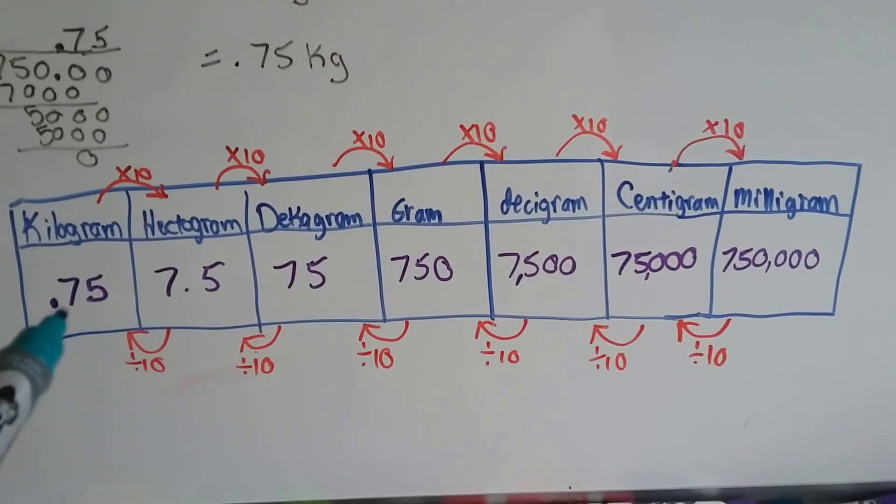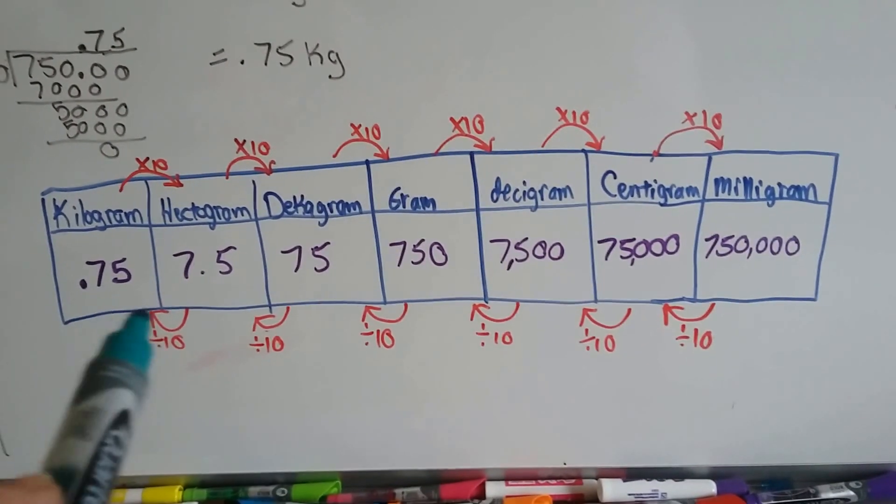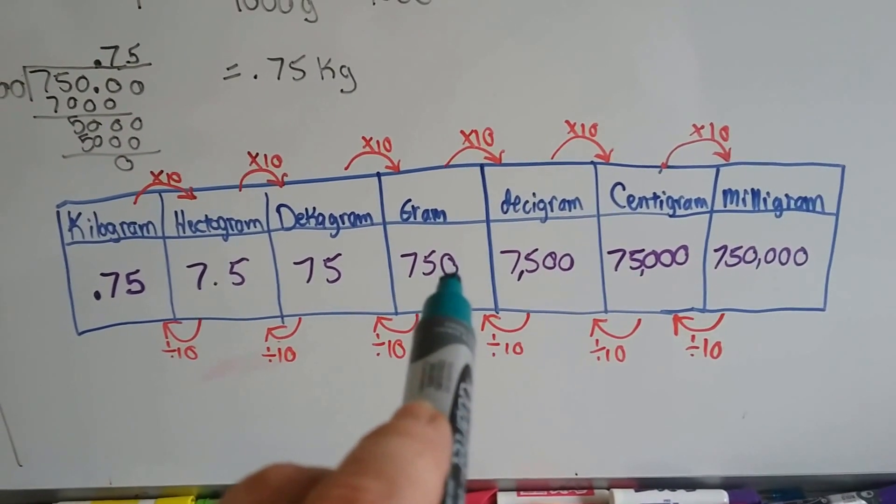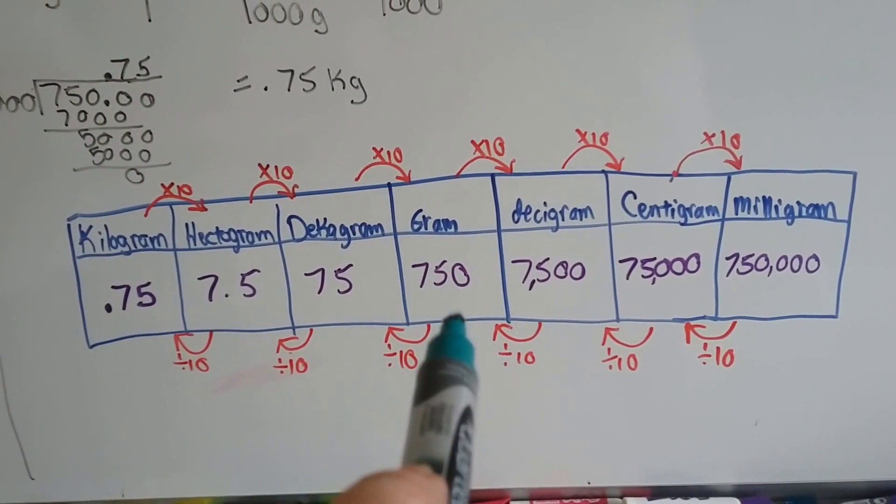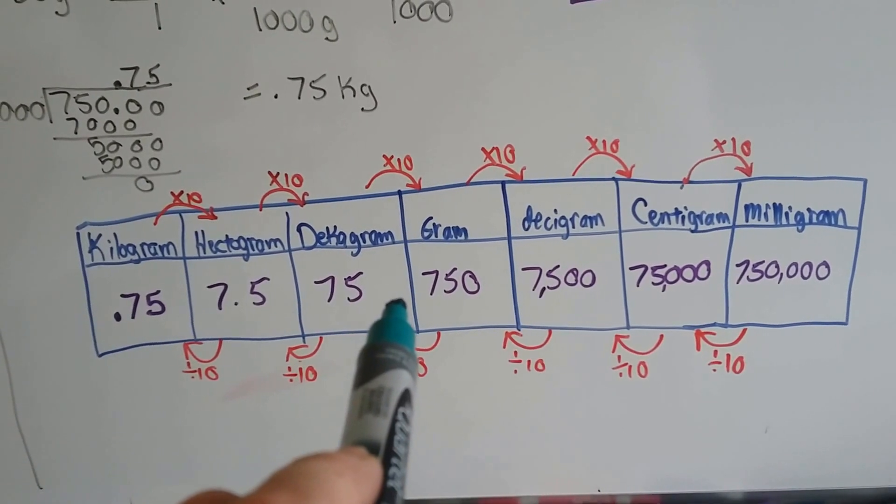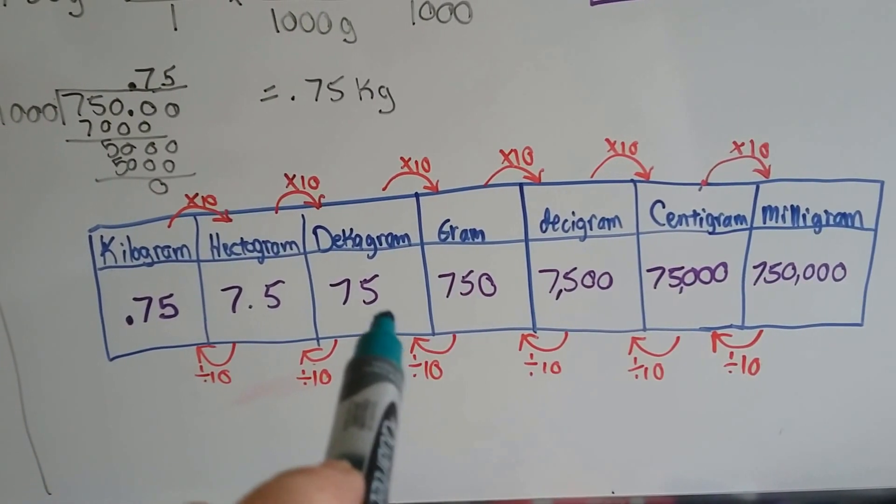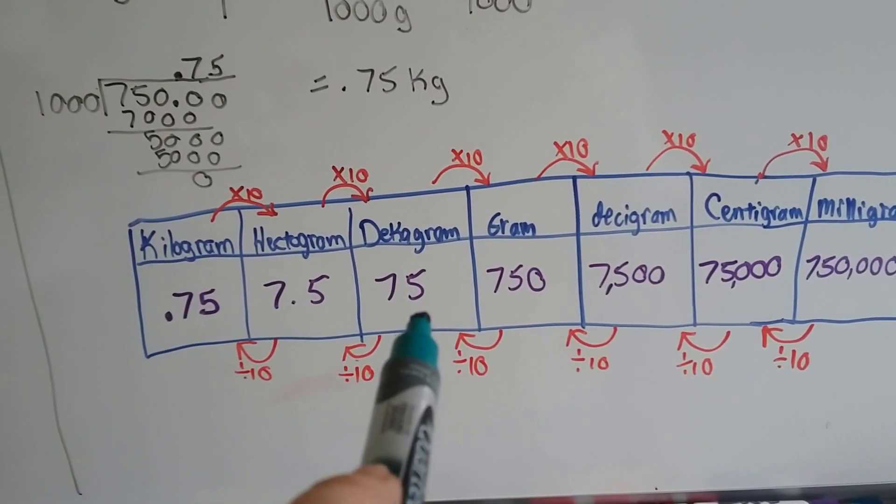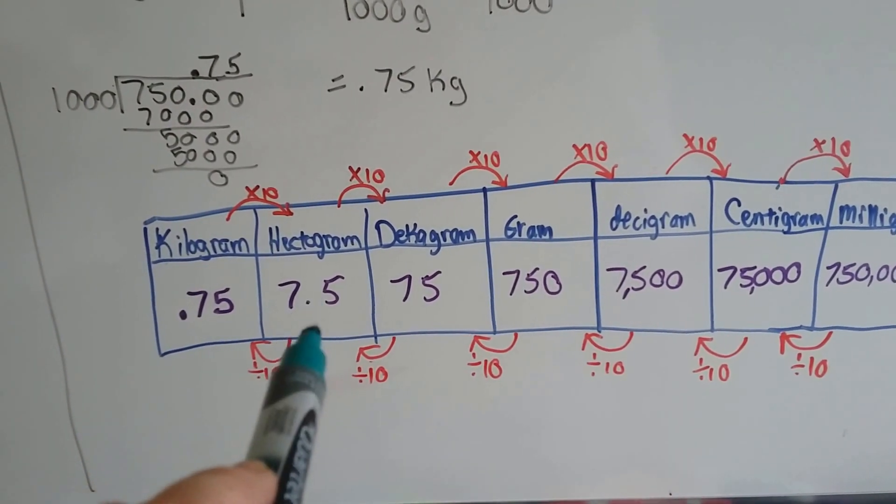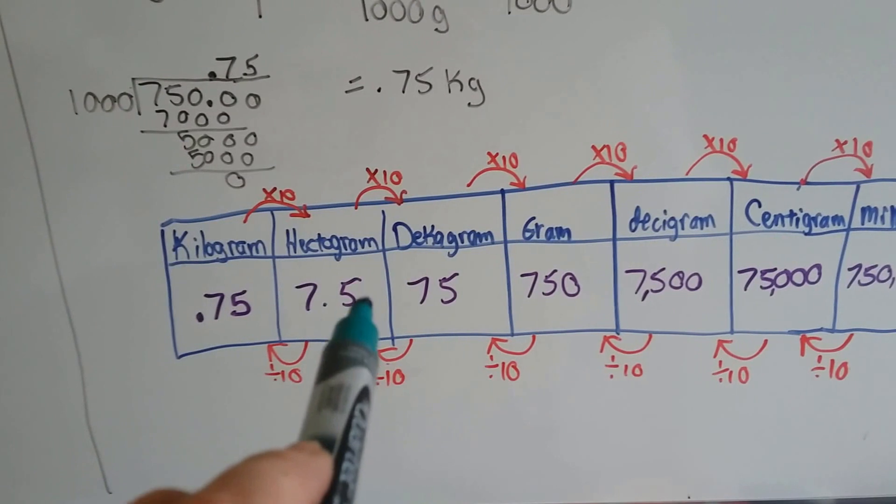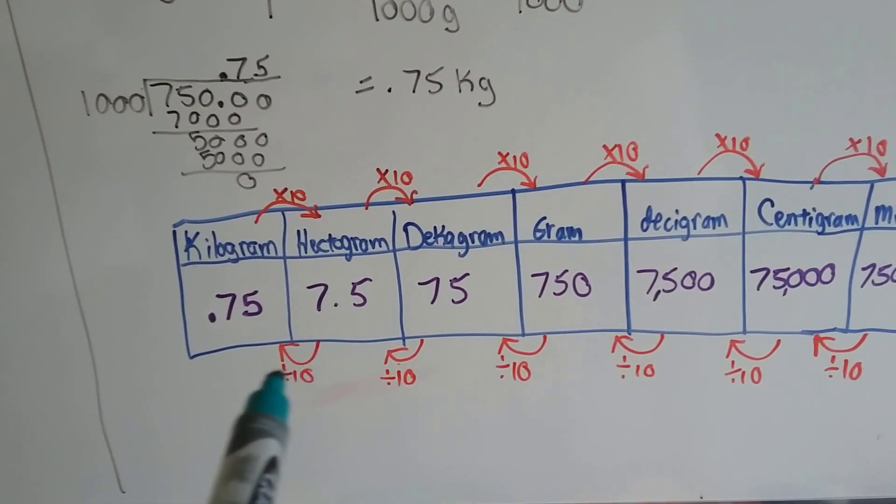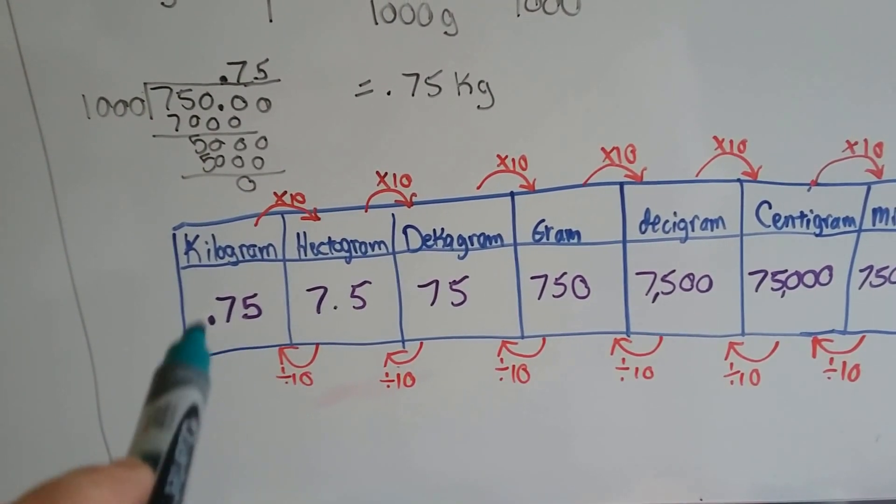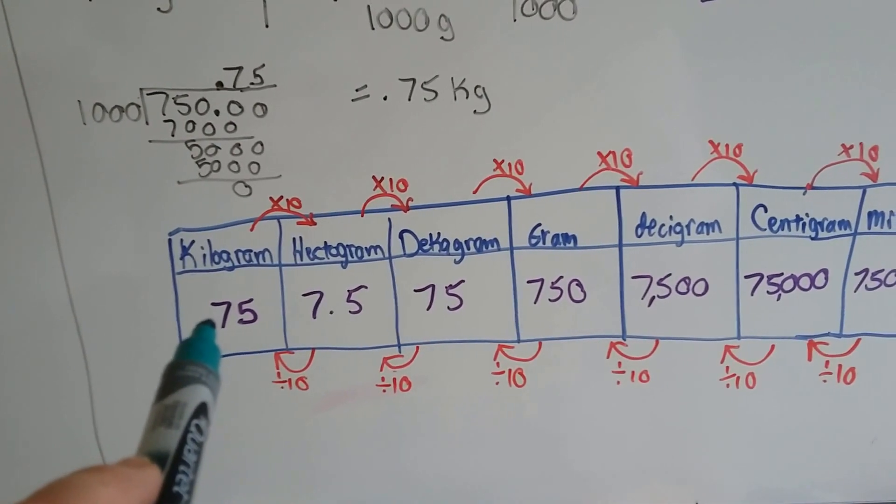Now, if we looked at a chart, here's the grams that it weighed, and we divide by 10. 750 in decagrams becomes 75. It drops a zero because we divide it by 10. In hectograms, it becomes 7.5 because the decimal point got moved over to the left. And in kilograms, it moved over to the left one more time in front of the seven and became 0.75.